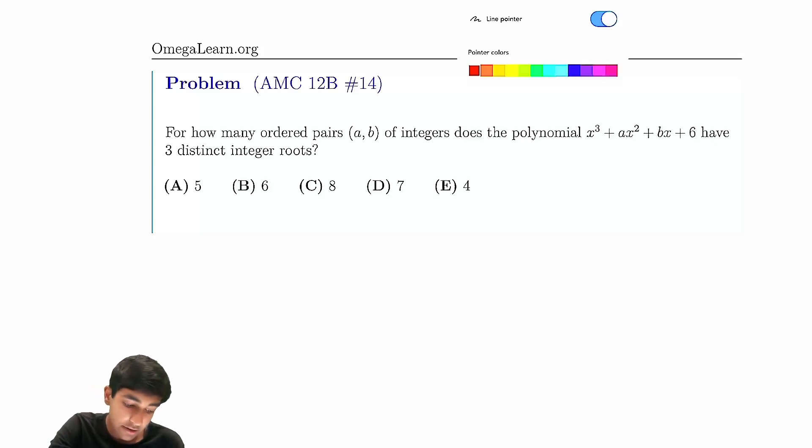For how many ordered pairs a, b of integers does the polynomial have three distinct integer roots?